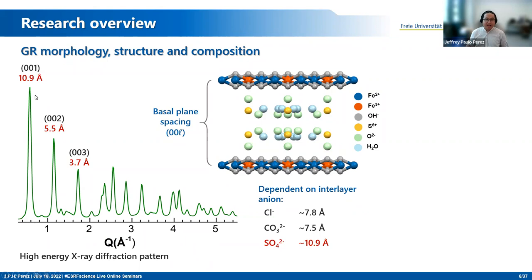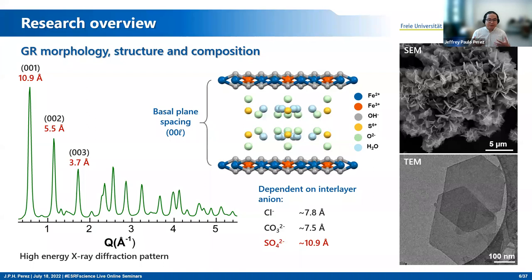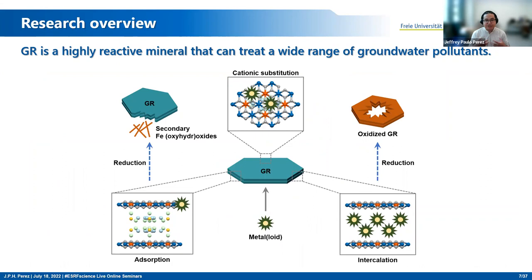Similar to green rust found in natural environments, green rust synthesized in the laboratory also exhibits the hexagonal plate-like morphology, as seen here in the scanning electron micrograph and the transmission electron micrograph. What makes green rust interesting from an environmental geochemistry perspective is that it is a highly reactive mineral that can treat a wide range of pollutants. In the case of metal and metalloid contaminants, it is able to adsorb the contaminants on its reactive surfaces, and sometimes incorporate them into its structure through cationic substitution or through intercalation by trapping them in the interlayer region.